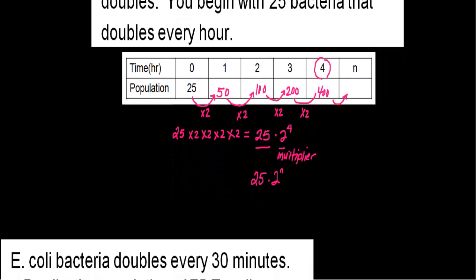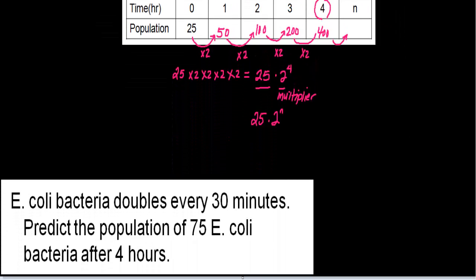Let's see an example. For this example, it says that E. coli bacteria doubles every 30 minutes. Predict the population of 75 E. coli bacteria after 4 hours. The first thing I'm going to do is write my expression. The final amount of bacteria will have an initial amount, which I'm going to call P, a multiplier which I'll call A, and an exponent which I'll call T — that stands for the amount of time that has passed.